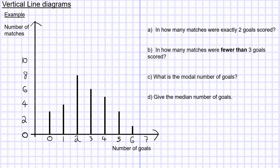Vertical line charts are very similar to bar charts. On the x-axis we will have discrete or categorical data and on the y-axis we will have, generally for a vertical line chart, discrete data.